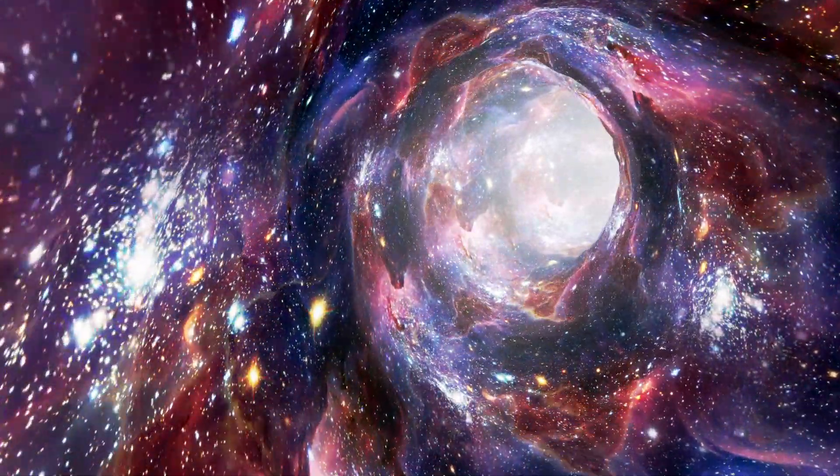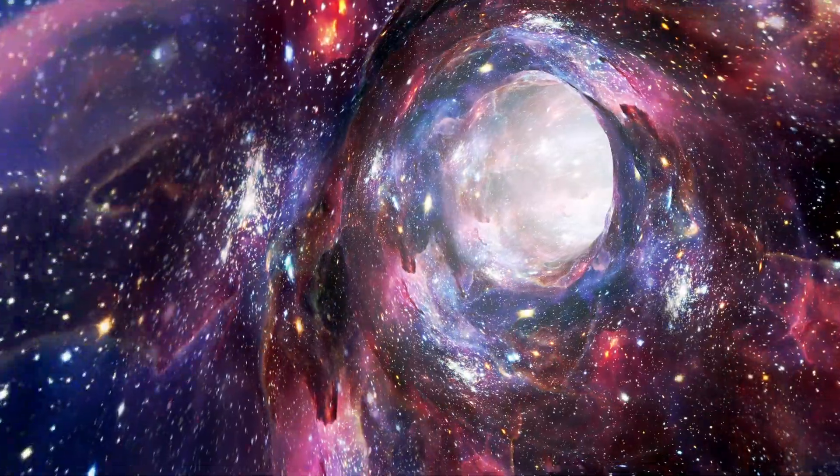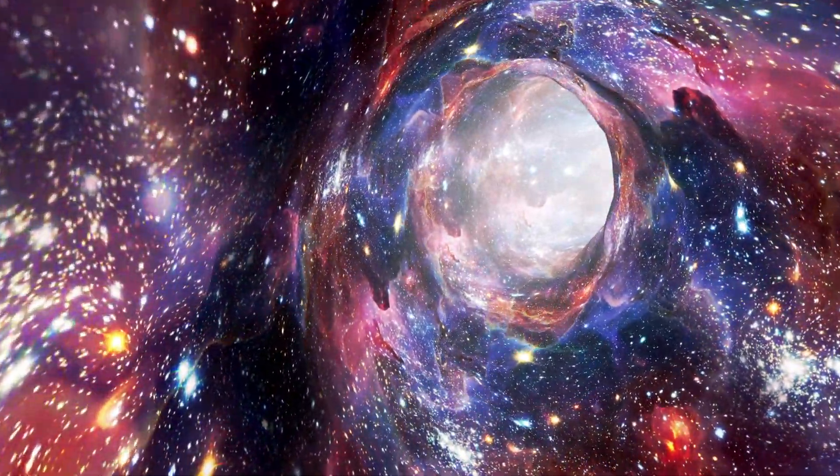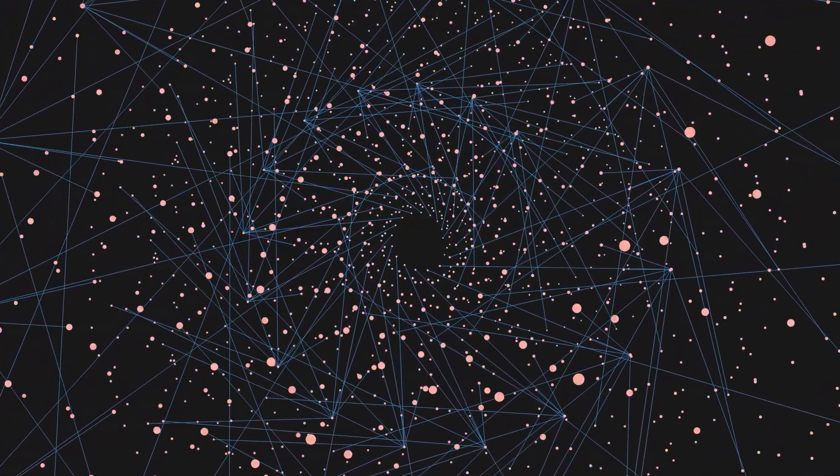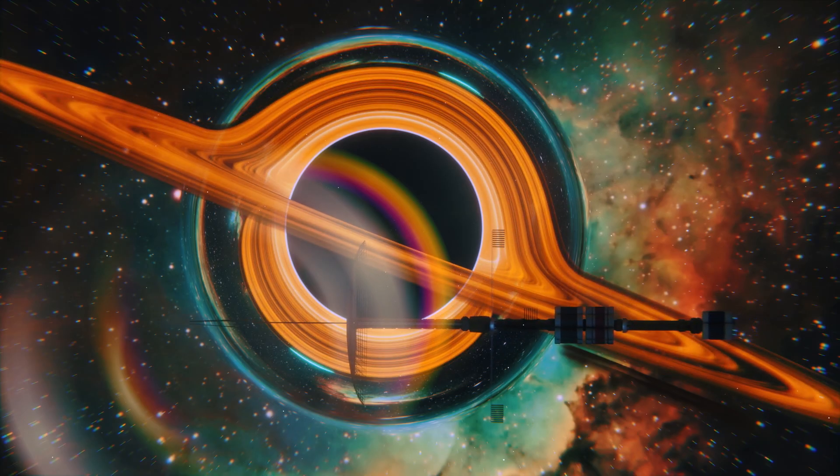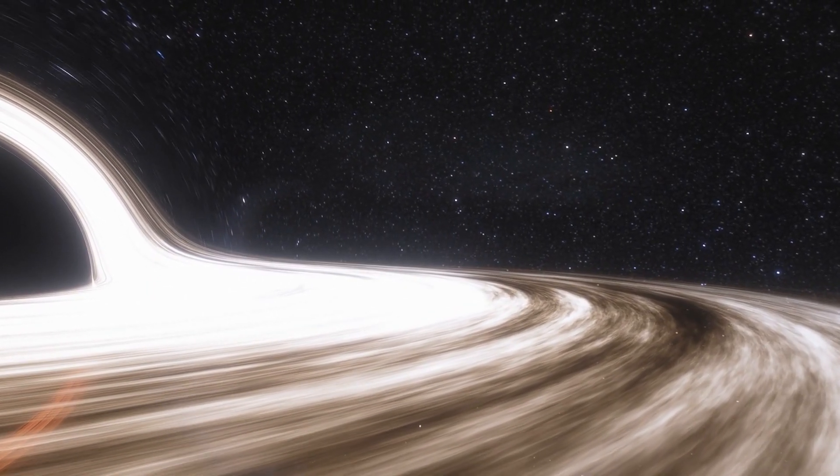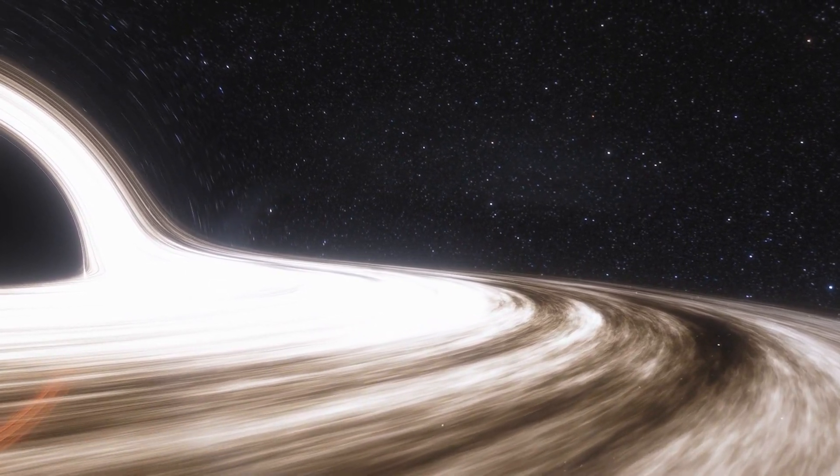The event horizon is an important concept in the study of black holes because it defines the boundary between our observable universe and a region of space-time from which we cannot observe anything. Once an object has crossed the event horizon, it is effectively cut off from the rest of the universe. This makes it impossible for us to observe anything that happens beyond the event horizon, and it also means that any information contained within the object is lost forever.